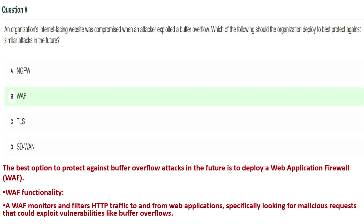The explanation is: the best option to protect against buffer overflow attacks in the future is to deploy a Web Application Firewall (WAF). A web application firewall monitors and filters HTTP traffic to and from web applications, specifically looking for malicious requests that could exploit vulnerabilities like buffer overflows. That's why the correct answer is Option B: WAF.